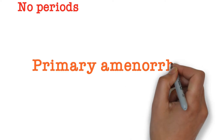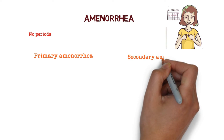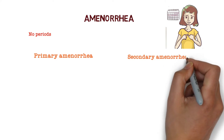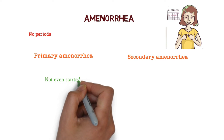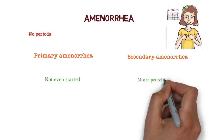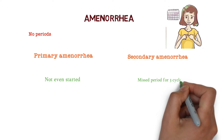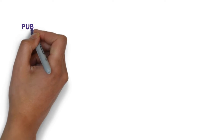We have two types of Amenorrhea. The first one is Primary Amenorrhea and the second one is Secondary Amenorrhea. In Primary Amenorrhea, the periods have not even started. And in Secondary Amenorrhea, there are missed periods for three cycles.